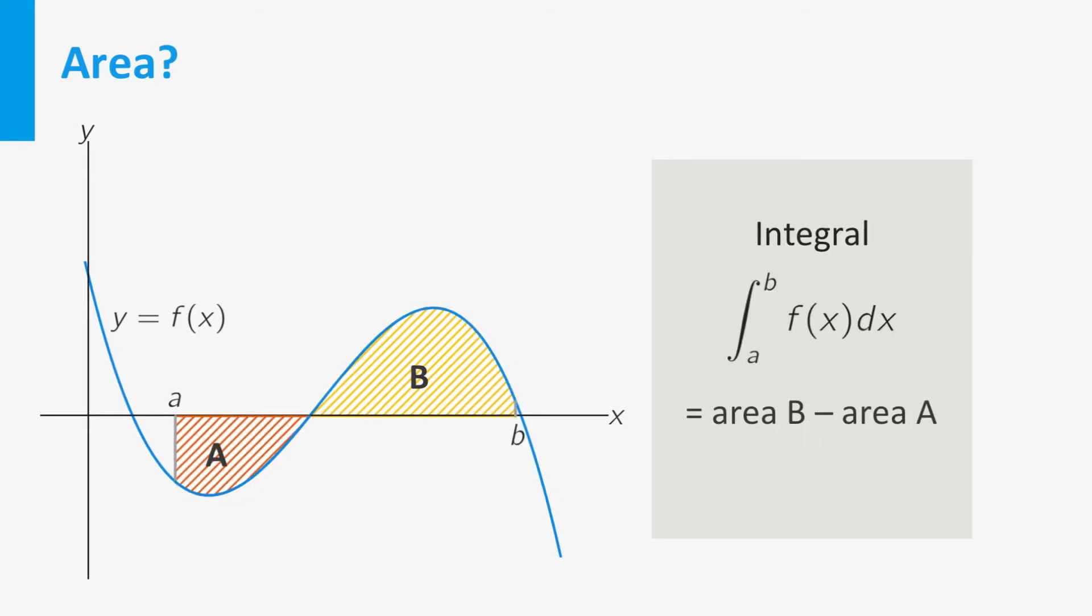Now take the limit to obtain the integral. The graph, the horizontal axis, and the lines x equal to a and x equal to b enclose a region, and the integral represents the total area of the part above the horizontal axis minus the area of the part below the axis. It is referred to as the signed area of the region.